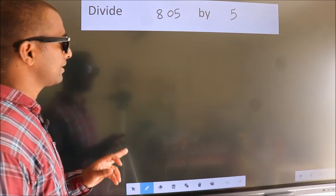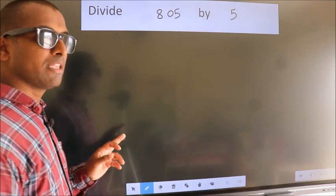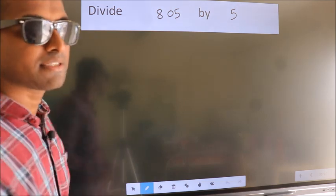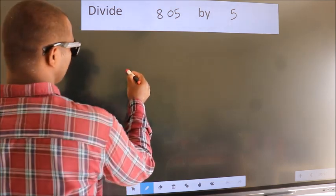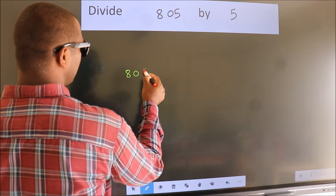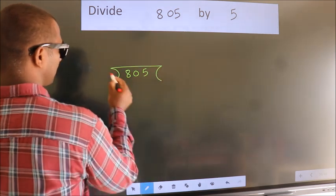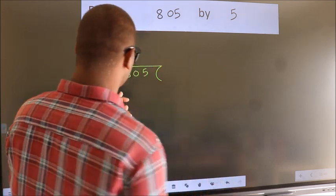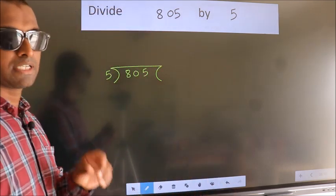Divide 805 by 5. To do this division, we should frame it in this way. 805 here, 5 here. This is your step 1.